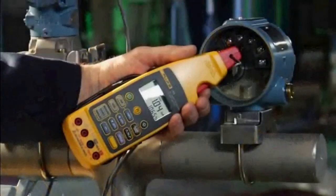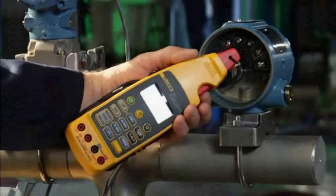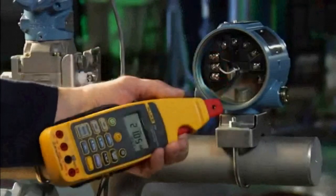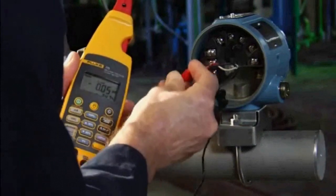Next, substitute test the transmitter with the Fluke 773. Remove the signal wires from the transmitter and break the loop. Connect the test leads from the Fluke 773 to the transmitter wires to use the milliamp simulate function.